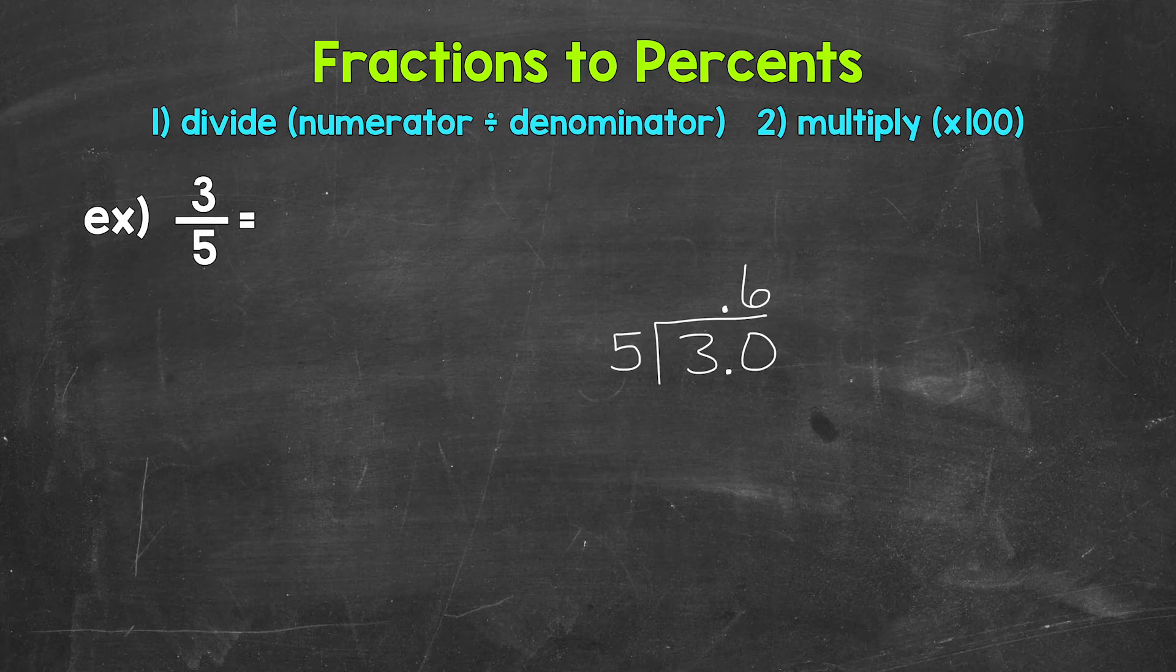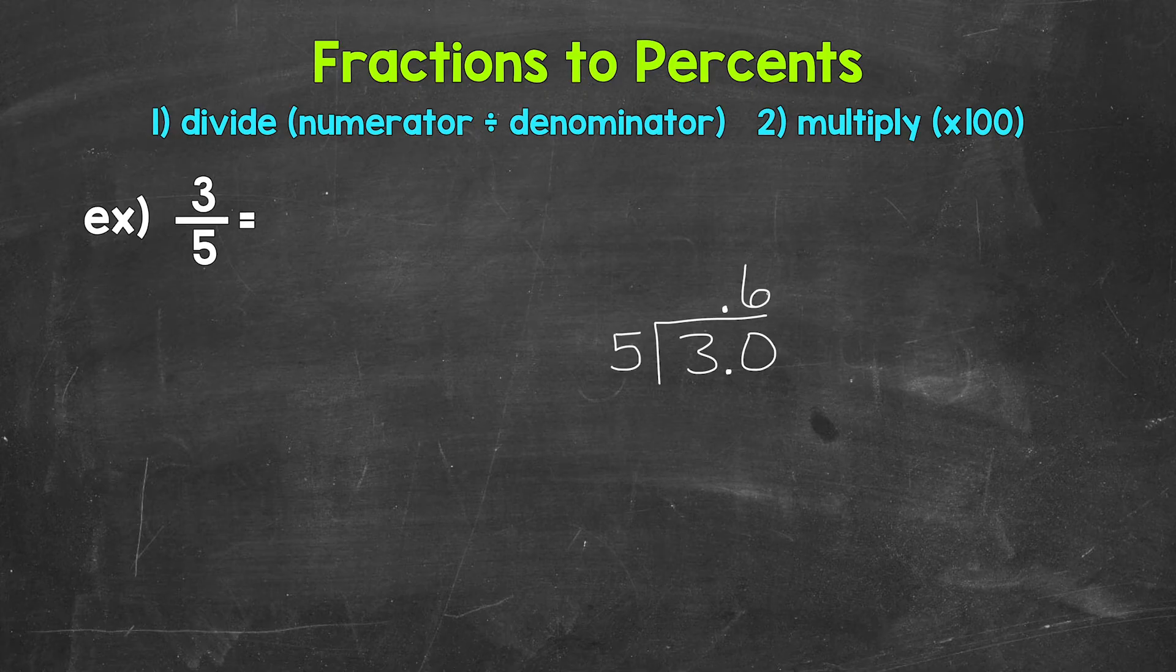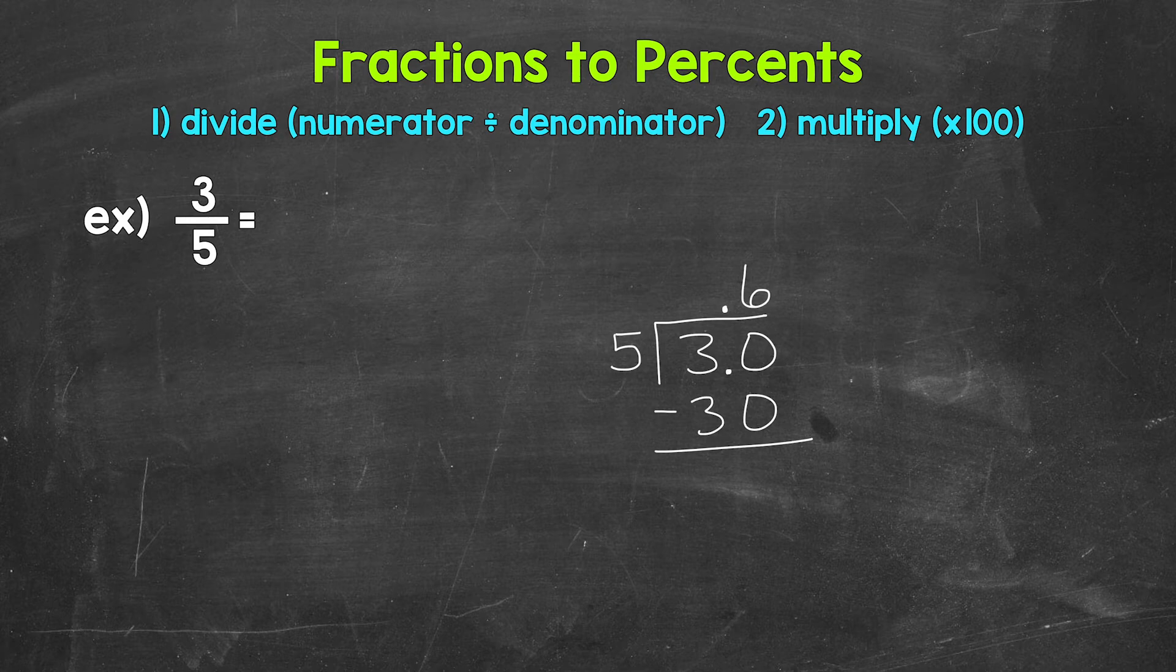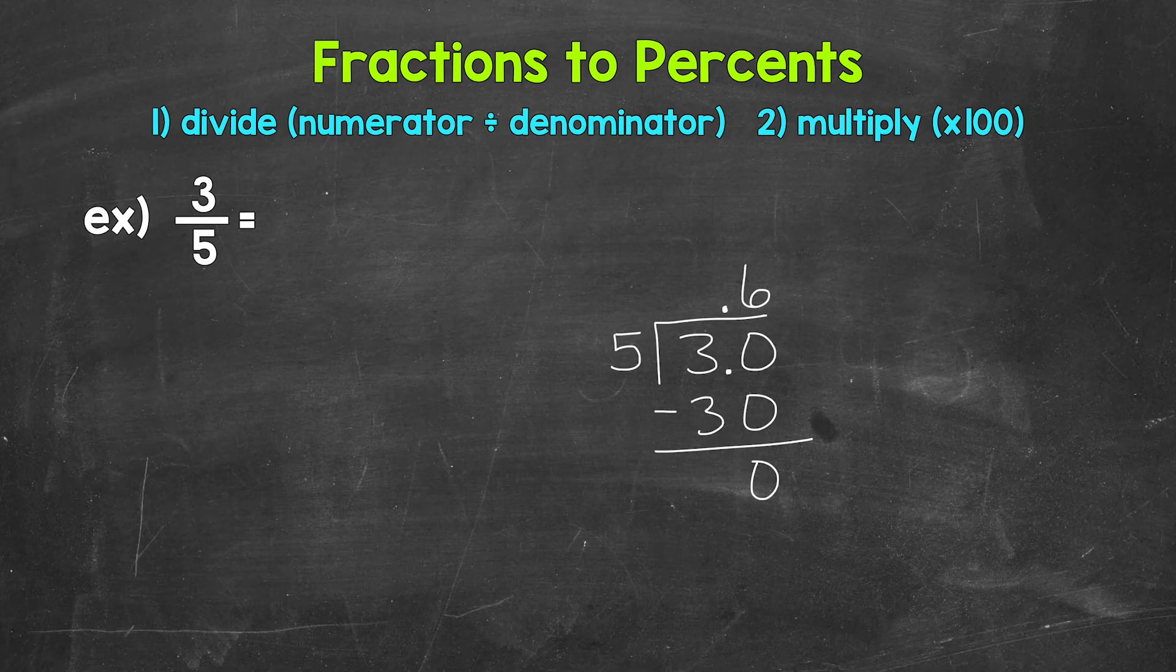Make sure that 6 is above the zero since we used that zero and thought of this as 30 divided by 5. And that's going to line us up correctly. Now we multiply 6 times 5 is 30, subtract 30 minus 30 is zero. Now we have a clean cut zero there at the bottom and nothing else to bring down within our problem. So we are done.